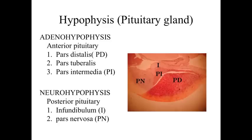The anterior and posterior pituitary have very different appearances in histological examination, and they also have very different developmental processes. The posterior pituitary develops from a nervous tissue downgrowth, where the anterior pituitary is more of an epithelial derivation, like we've talked about previously with hormone-secreting cells.